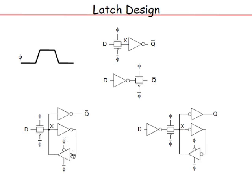Alternatively, you can remove the phi and phi bar from the feedback inverter and just make it a simple weak inverter, so that D can always overpower the feedback when transparent. Once D overpowers it and x flips, positive feedback takes over and there is no longer any issue — similar to what happens in an SRAM cell. In a standard cell environment, you add a buffer at the input and output to isolate the internal node.